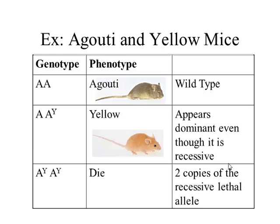We have agouti and yellow mice. Agouti is the wild type found most commonly in nature, and we call it the genotype Big A, Big A. When you have one copy of the mutant allele, Big A-Y, it's going to end up looking yellow. And when you have two copies, Big A-Y, Big A-Y, they actually die.